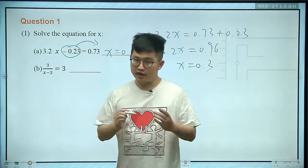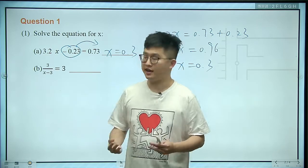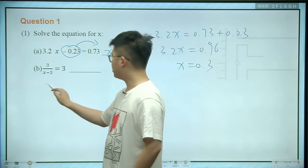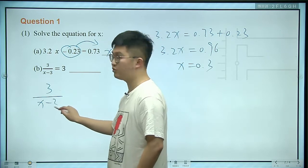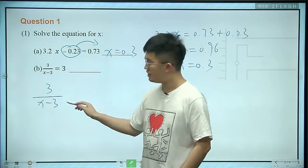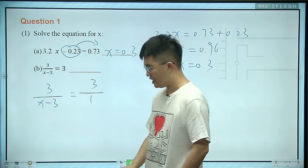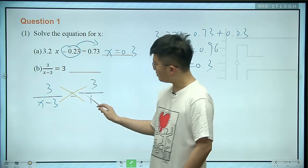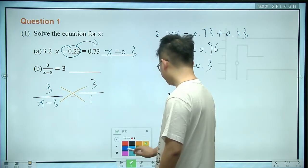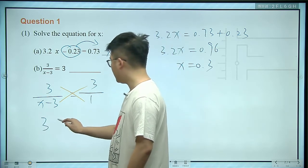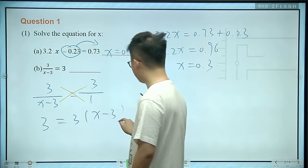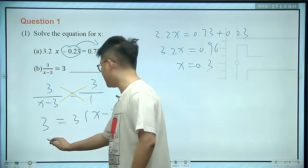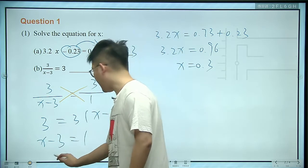The next one will look a little bit strange, because you can see the x is in the denominator now — it's part of the denominator. But still, we can do something like a cross multiplication. So it goes like this: 3 over x minus 3, and the 3 on the right side we can write as 3 over 1. In this situation, we multiply this times this and this times this, so it goes like 3 times 1, which is 3, equals 3 times x minus 3.